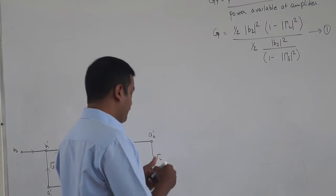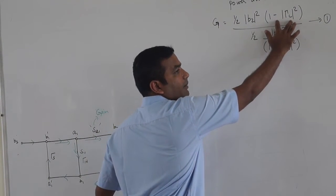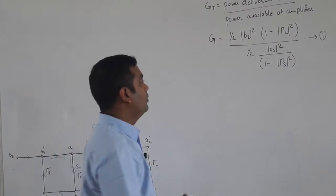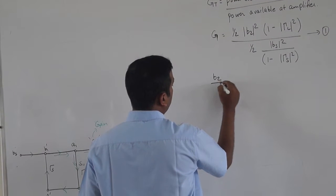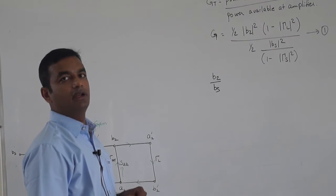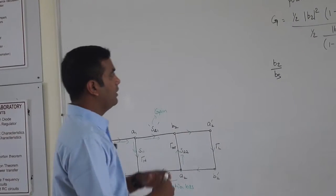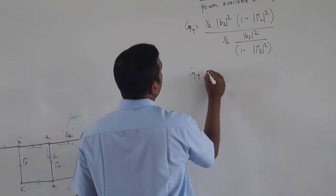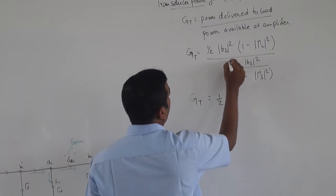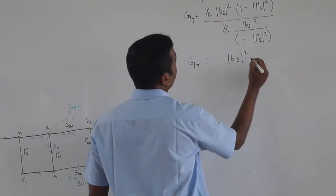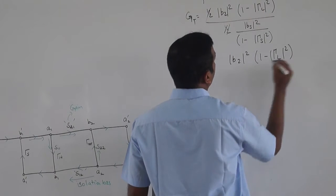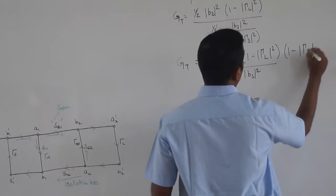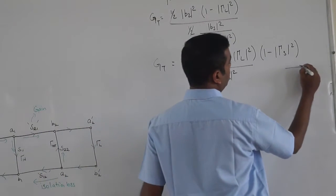In a practical condition, the power delivered to the load by the RF amplifier is (1/2)|b_2|² × (1 − |γ_L|²). For an ideal amplifier, γ_L = 0, so it reduces to (1/2)|b_2|². Now let us compute what b_2/b_s is — the transfer function b_2/b_s. We can write G_T as |b_2|²(1 − |γ_L|²) / (|b_s|²(1 − |γ_s|²)), since the (1/2) factors cancel.